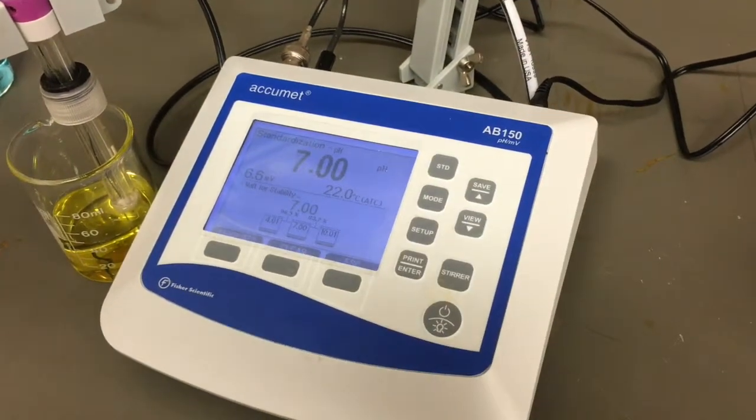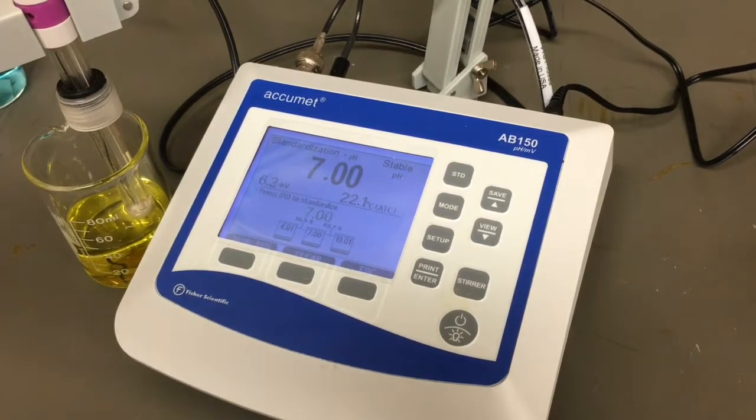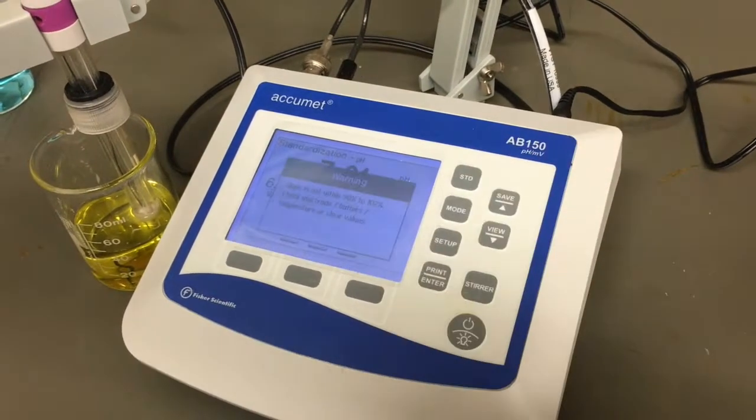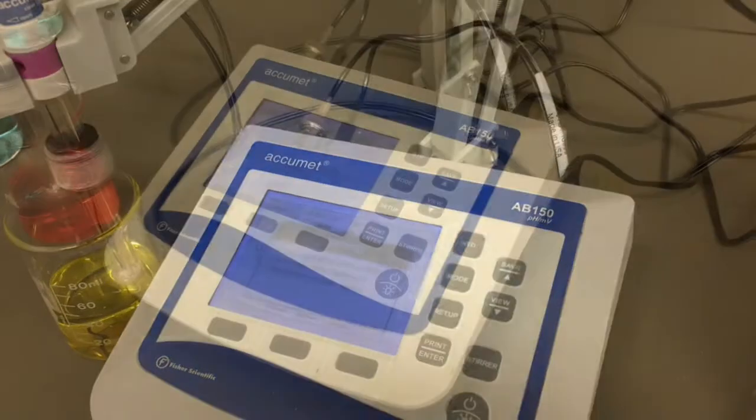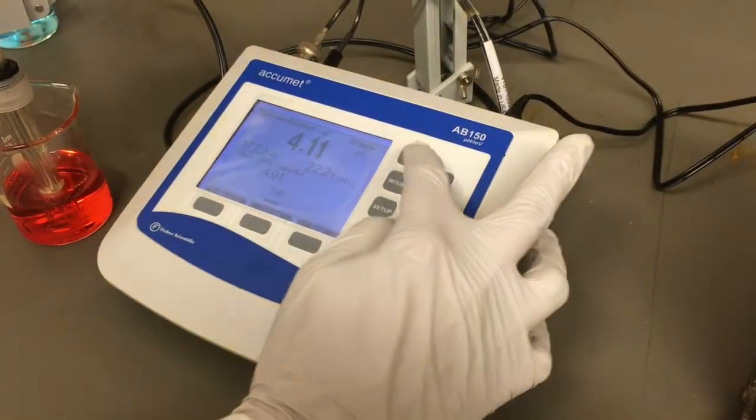If the pH slope is out of the acceptable range, you may get an error when you try to confirm the reading. If this happens, clear the current values, confirm your buffers are at room temperature, and retake the readings.